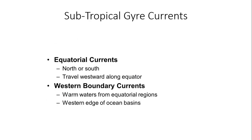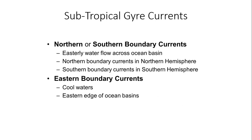Next, the western boundary currents. The western boundary currents carry warmer waters from the equatorial regions northward. They are found at the western edge of ocean basins in general. Moving on to the northern and southern boundary currents, we see easterly water flow across the ocean basin — the northern boundary currents in the northern hemisphere and the southern boundary currents in the southern hemisphere. Then there are the cooler eastern boundary currents that direct cooler water from the north towards the south.